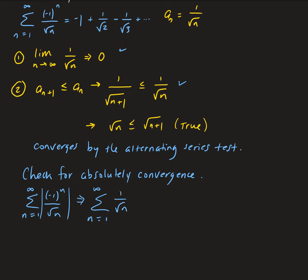1 over root n is a p-series with p equals 1/2. Since p equals 1/2, this series diverges.